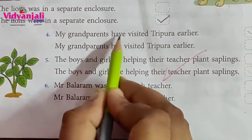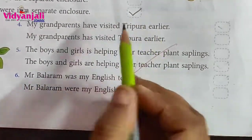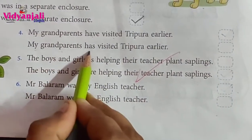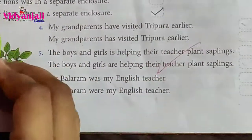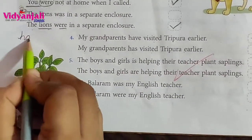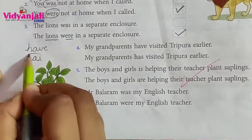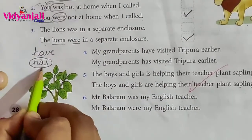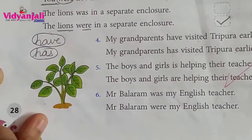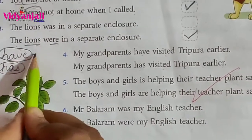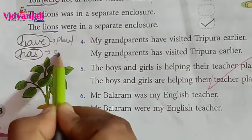'My grandparents have visited Tripura earlier' or 'My grandparents has visited Tripura earlier.' Students, here also — 'have' and 'has.' 'Has' is used for singular; 'have' is used for plural.